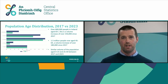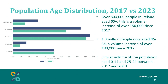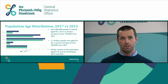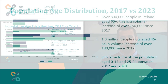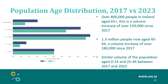Assessing the age distribution of the population and comparing 2017 with 2023: the blue bar is the 2023 population and the green bar is the 2017 population. In the 65-plus age group, over 800,000 people in Ireland are now aged 65 or above — a considerable volume increase of over 150,000 since 2017. In the 45 to 64 year-old age group there are now 1.3 million people, a volume increase of 180,000 since 2017. Similar volumes are seen in the 0 to 14 and 25 to 44 age groups when 2017 and 2023 are compared.